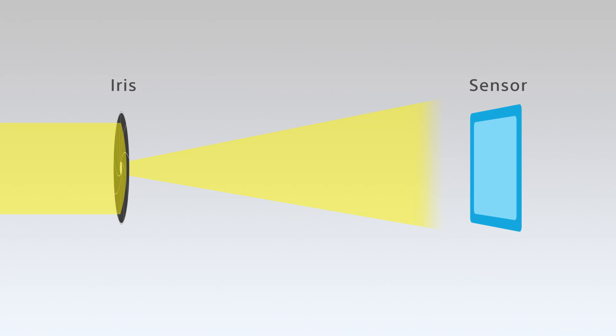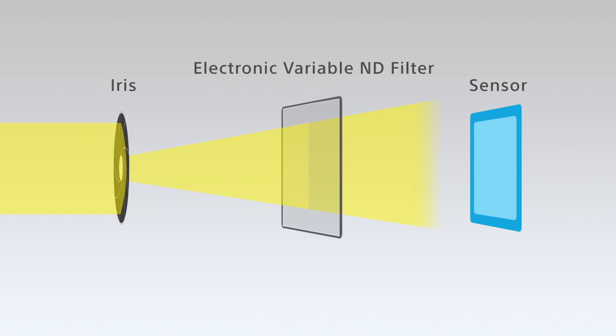To avoid resolution loss due to diffraction, you have to keep the aperture reasonably open and keep the light path at a certain level. The Electronic Variable ND filter can help with this, seamlessly changing the filter density to provide the best exposure while still keeping the iris open.